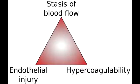What is Virchow's Triad? Virchow's Triad describes three broad categories of factors thought to contribute to venous thrombosis. These include hypercoagulability, endothelial damage, and blood stasis.